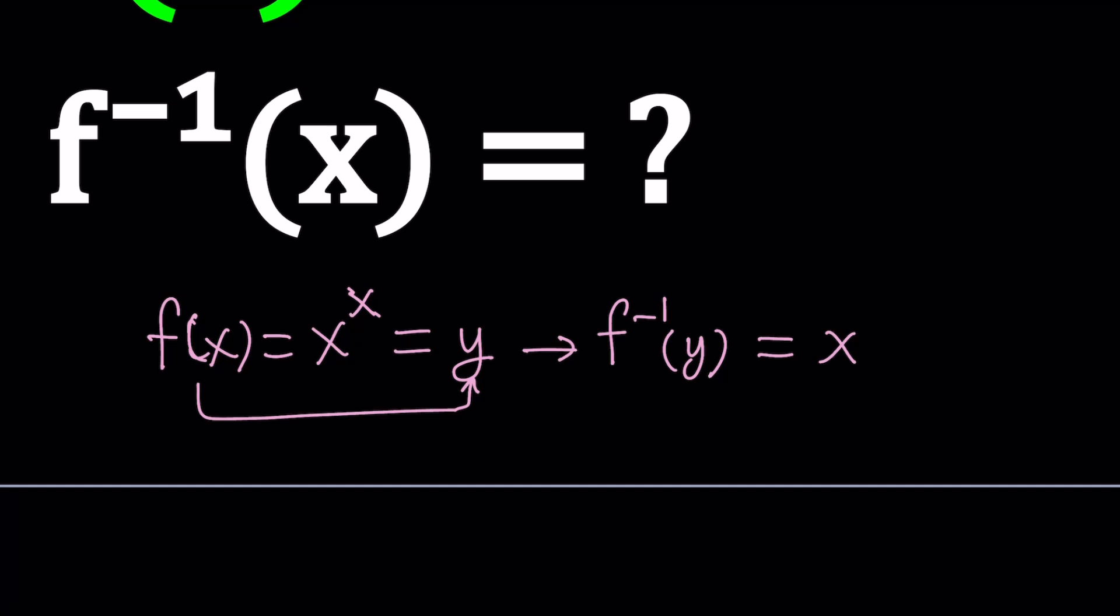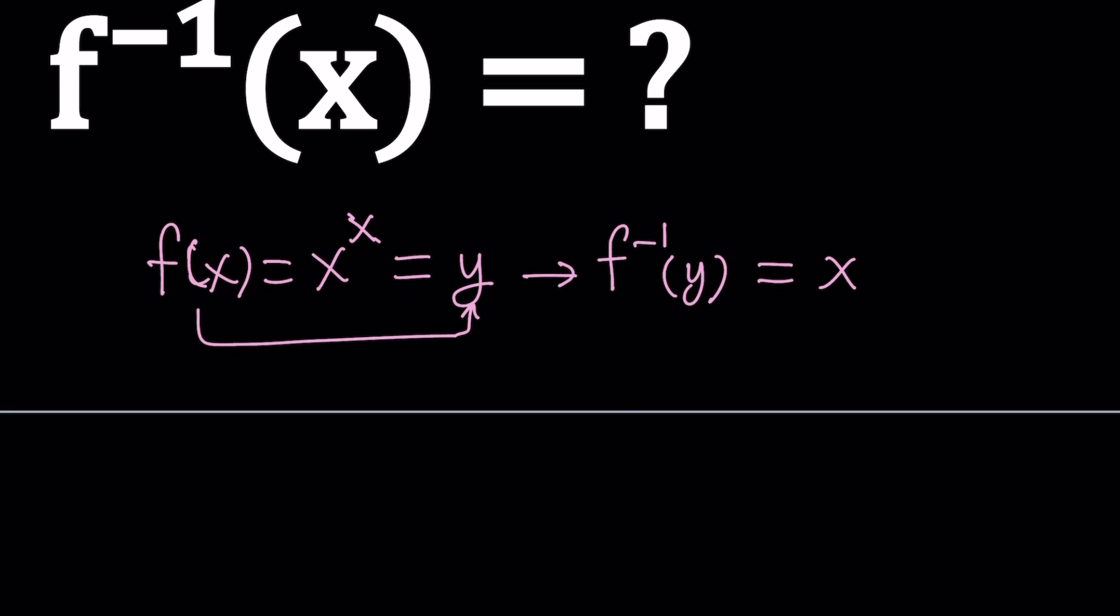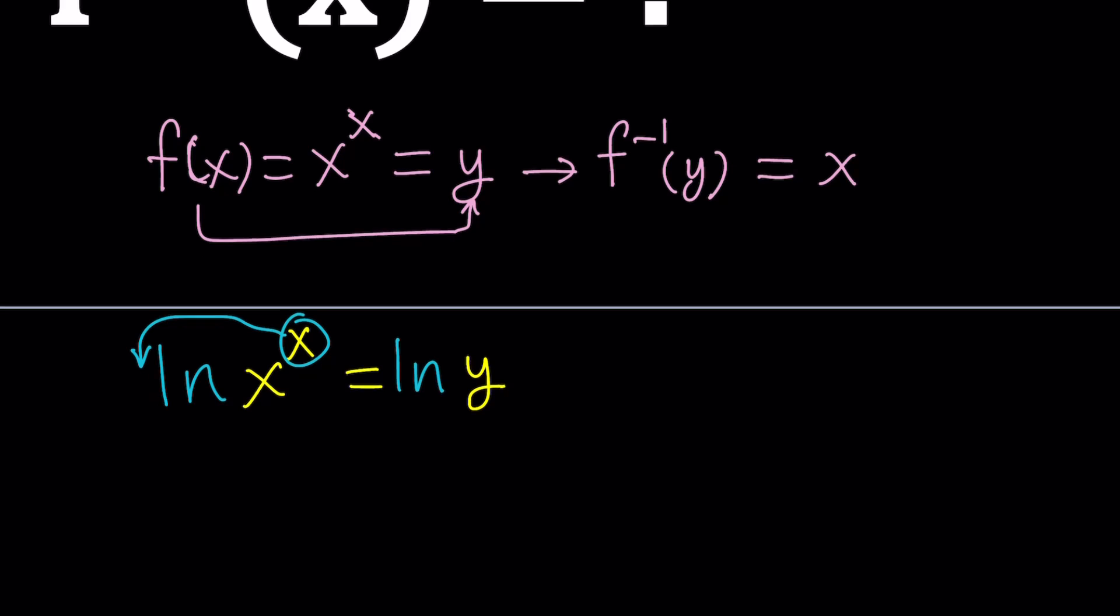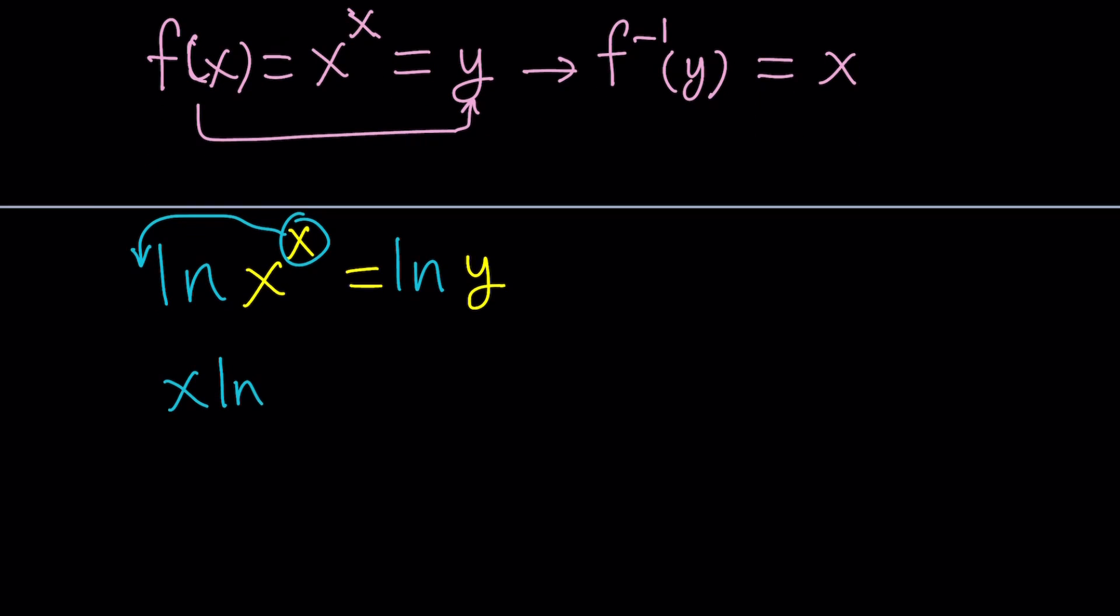To be able to solve this problem, here's what we're going to do. Since x to the x equals y, so my goal at the end is to get to f inverse of y, we can write this as follows. x to the x equals y. And let's go ahead and ln both sides. This, you can move to the front, bring it down, and write it as x ln x equals ln y. Make sense? Awesome.